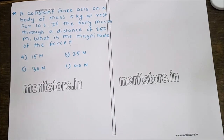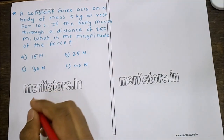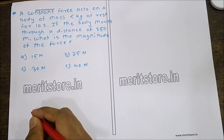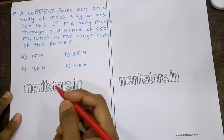A constant force acts on a body of mass 5 kg at rest for 10 seconds. If the body moves through a distance of 250 meters, what is the magnitude of force? The options given are 15 N, 25 N, 30 N, and 40 N.